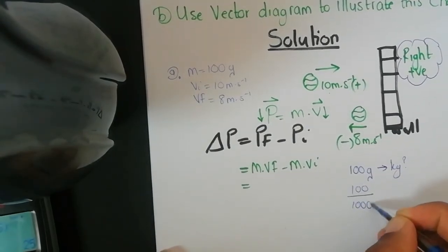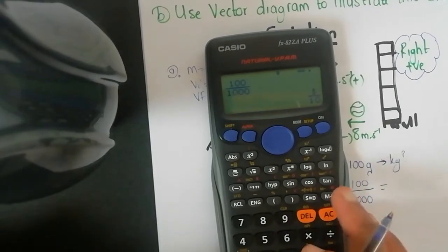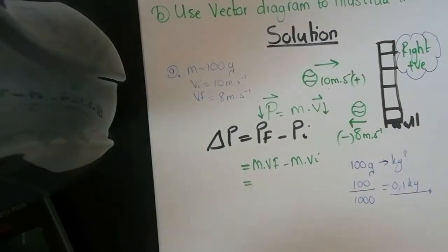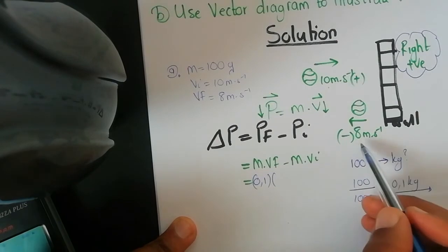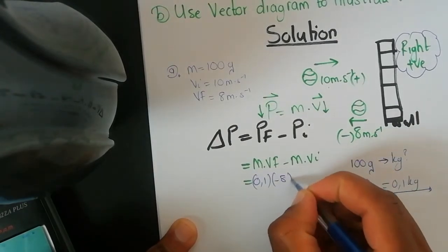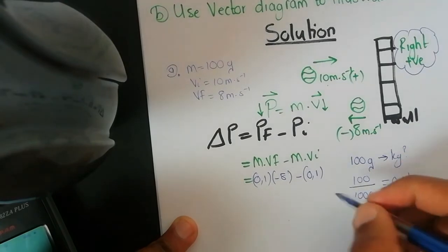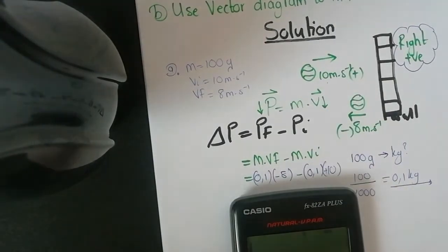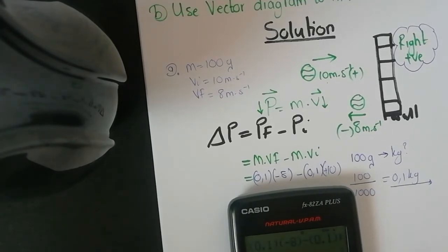100 divided by 1000 equals 0.1 kg. That is your mass. So the calculation is: 0.1 times negative 8, minus 0.1 times positive 10. On the calculator: 0.1 times negative 8 minus 0.1 times 10.